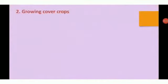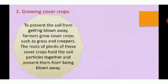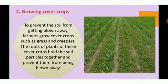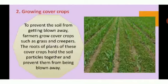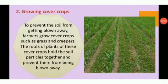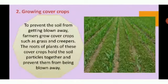The second method is growing cover crops. After a crop is harvested and before the next crop is sown, the soil remains bare and can easily be eroded. To prevent the soil from getting blown away, farmers grow cover crops such as grass and creepers. The roots of these plants hold the soil particles together and prevent them from being blown away. Trees and bushes are also grown along the boundary of the fields, which act as a shield against strong winds.